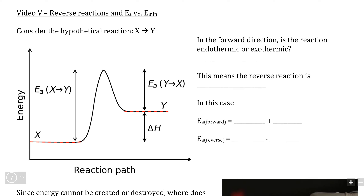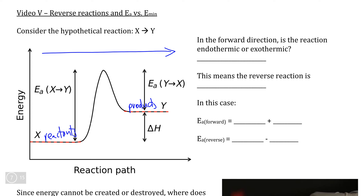If we look at this particular reaction in the forward direction, we can see that the potential energy of our products is greater than the potential energy of our reactants, meaning that in the forward direction we are dealing with an endothermic reaction because we can see that delta H is clearly a positive number.